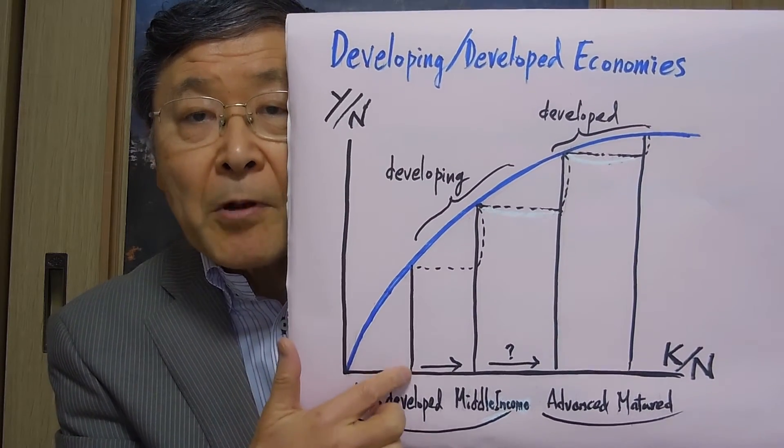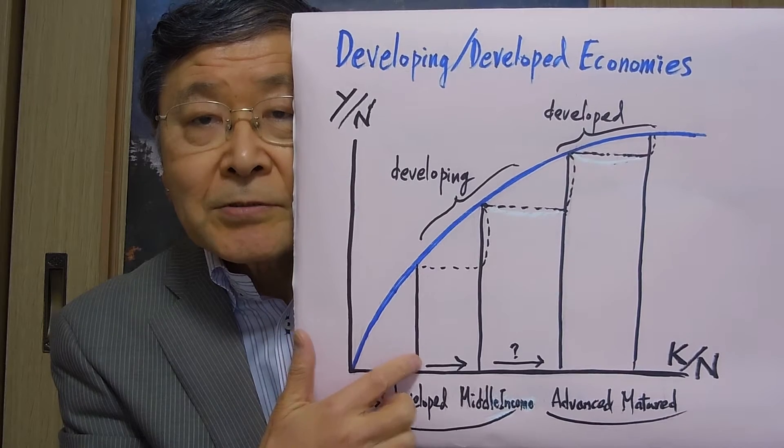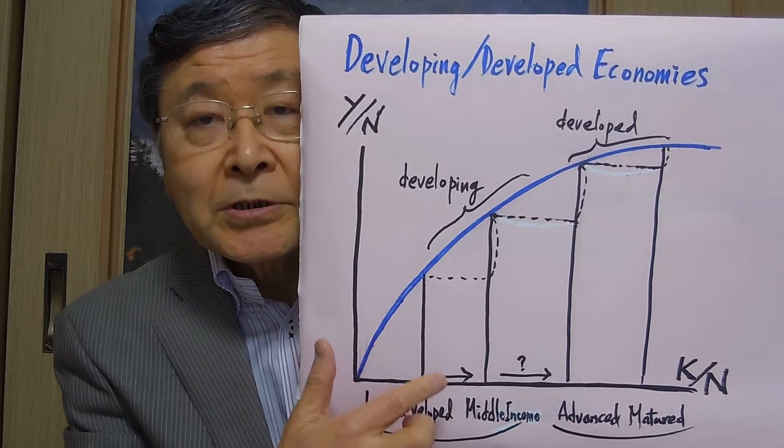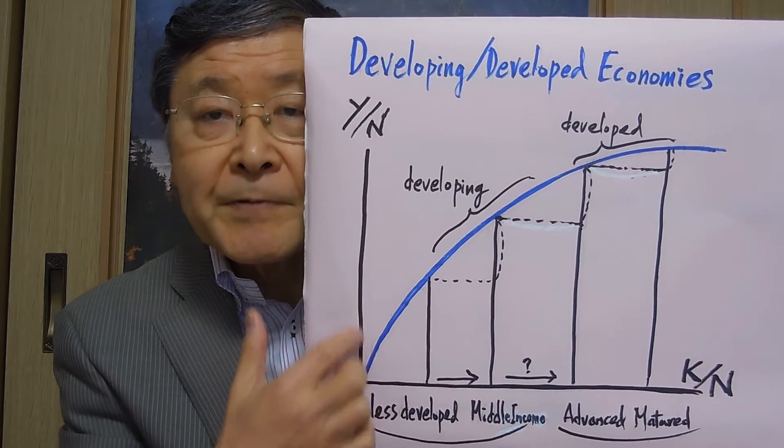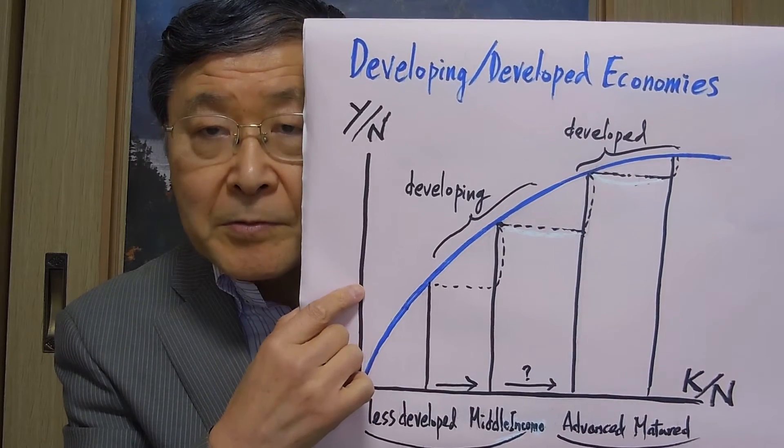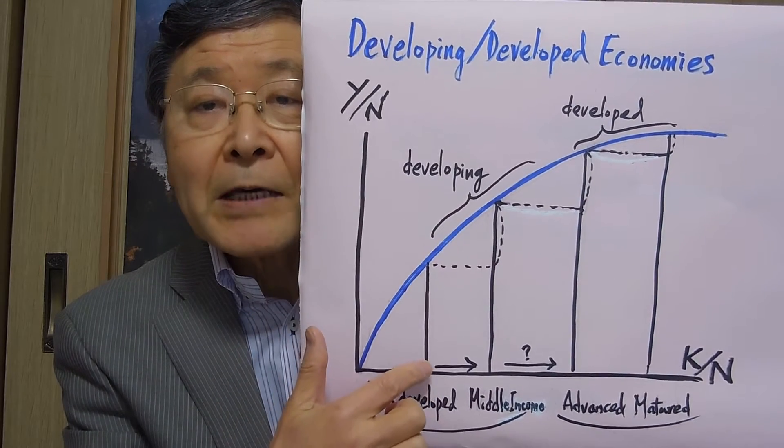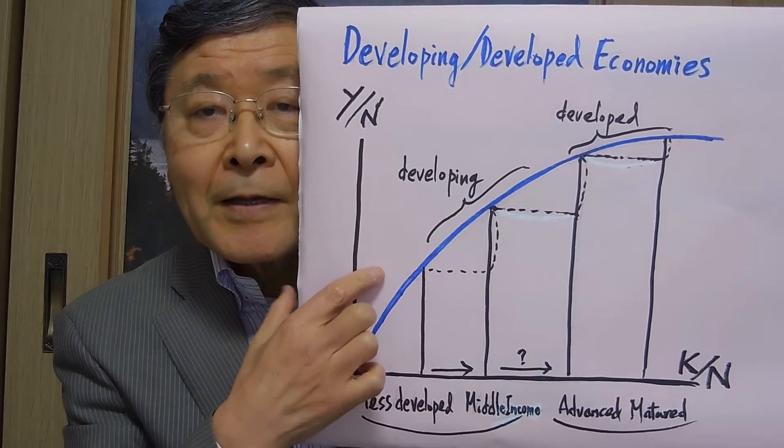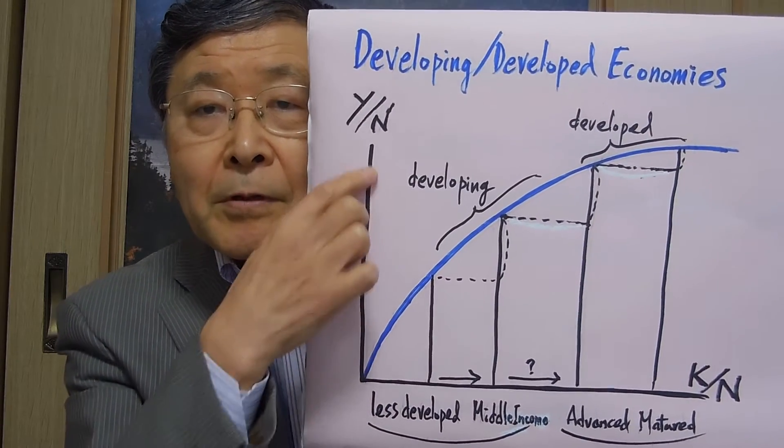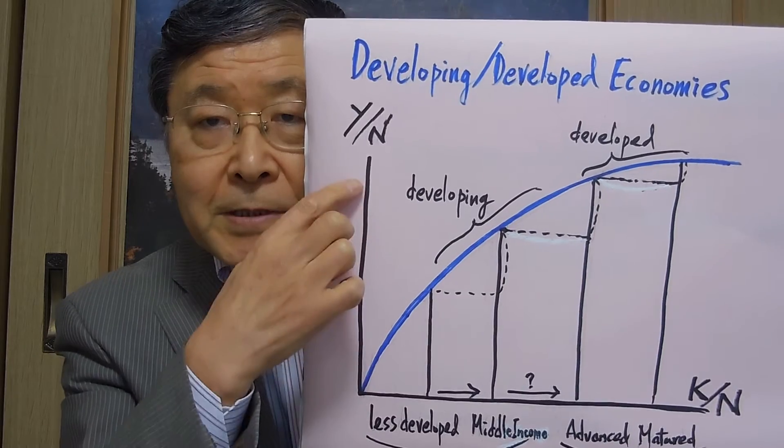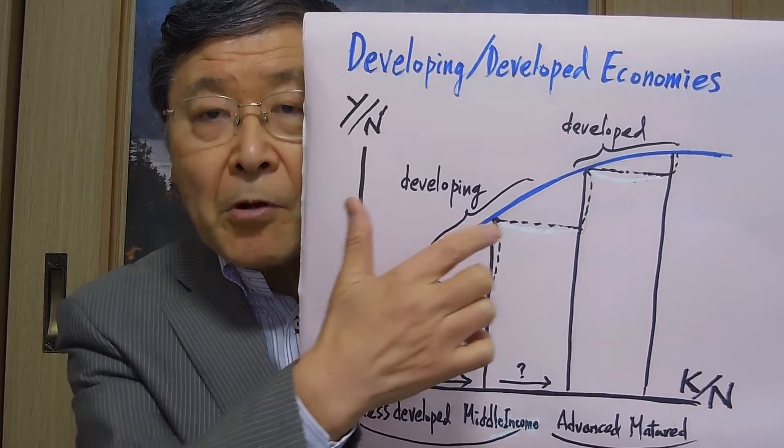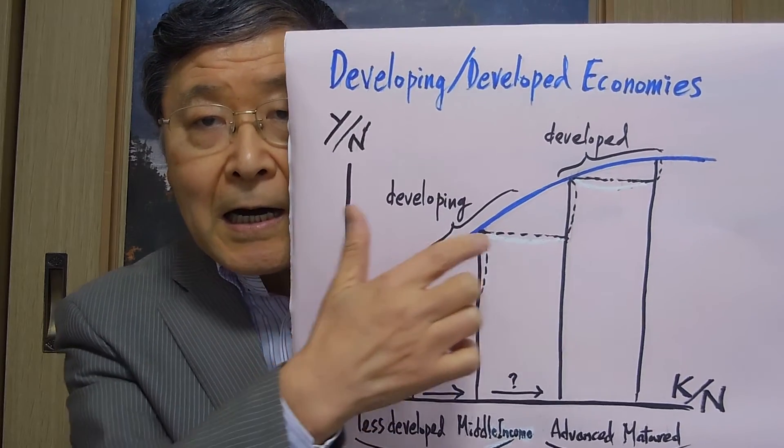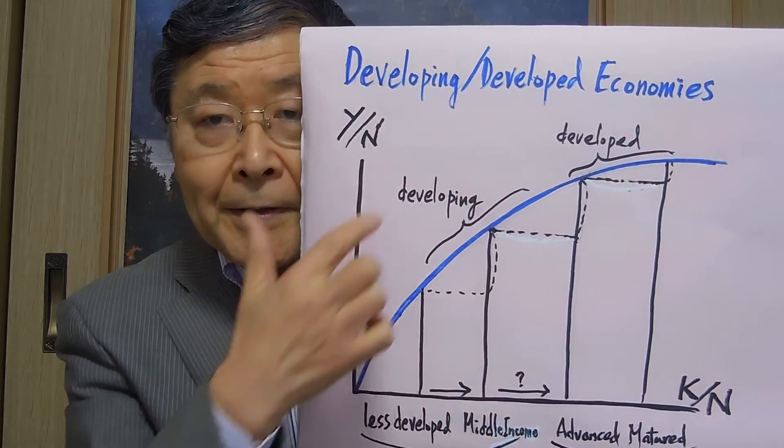At this less developed stage, with a very low value of capital-labor ratio, not much capital accumulation, then the output-labor ratio is very low, very less developed stage. But as the capital accumulation progresses over time, then the output per labor force tends to increase. So this is the rapidly developing stage. And many of the developing economies are somewhere here.